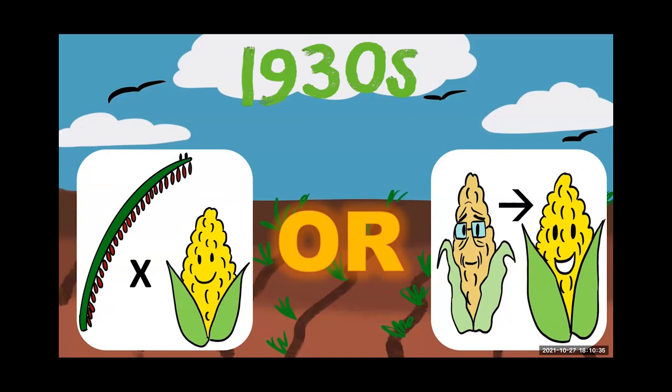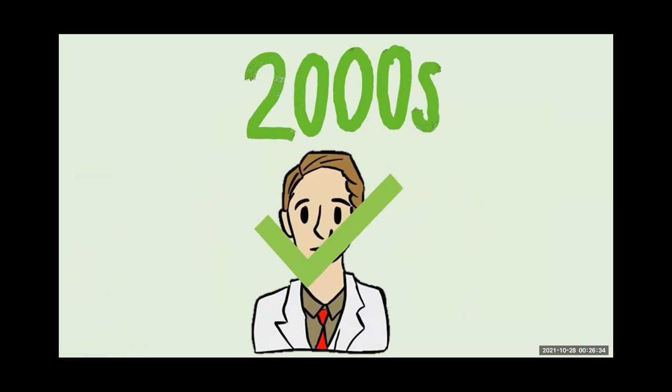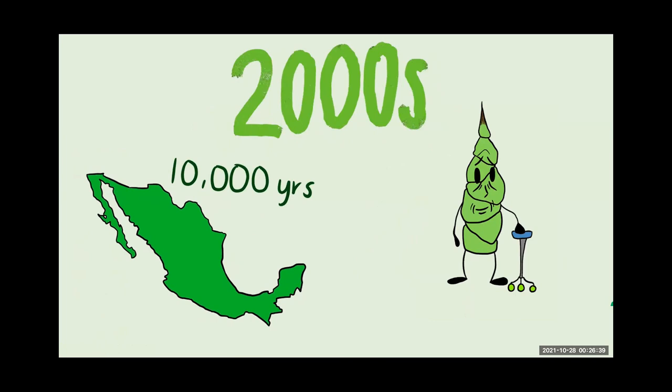Flash forward to the early 2000s, Beadle's hypothesis was confirmed. Genetic and archaeological evidence found that maize was domesticated 10,000 years ago in Mexico from its wild progenitor teosinte, or Z maize subspecies parviglumis. But why did it take so long to find this out?